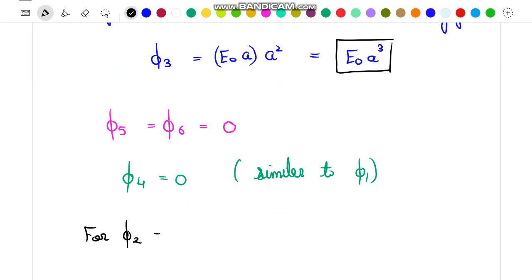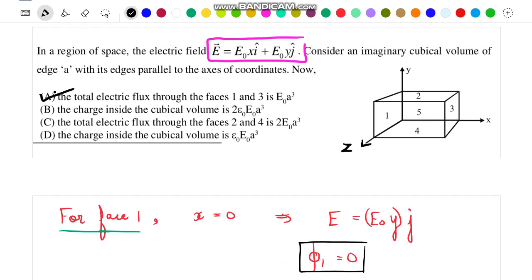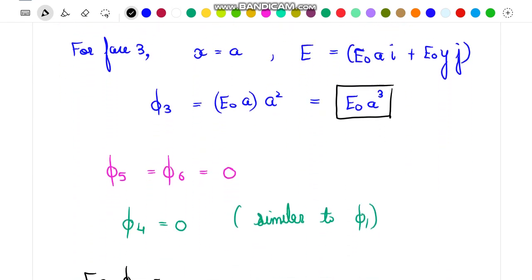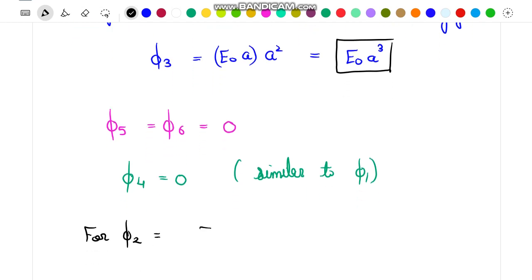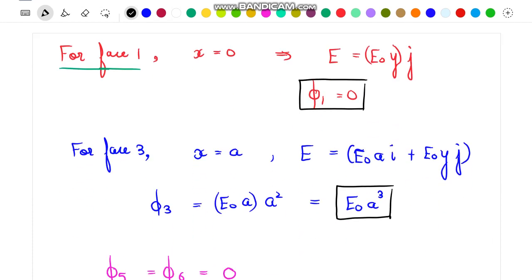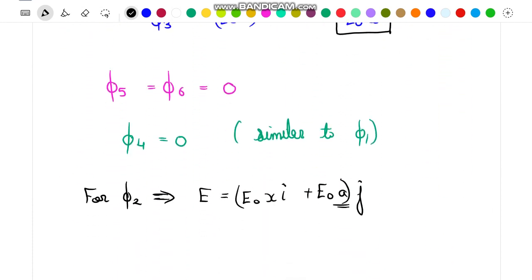Now let us calculate the flux passing through face 2. Face 2 is the top most face. For this particular face, we know that the field will be equal to E₀x î plus E₀a ĵ, since the y coordinate of all the points lying on this face 2 will be equal to a. That's why I have written, instead of y, I have written a.